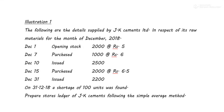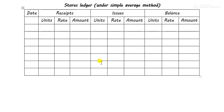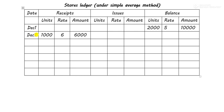Now let's solve a short illustration. The following details are supplied by JK Cements. December 1: opening stock 2000 units at ₹5, then 1000 units purchased at ₹6, issued 2500, purchased 2000 units again at ₹6.5, and issued 2200. On 31st December 2018, a shortage of 100 units was found. We start by recording the opening stock: December 1 — 2000 units at ₹5 = ₹10,000. Then December 7 — purchases of 1000 units at ₹6 = ₹6,000.